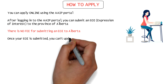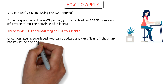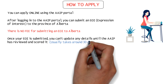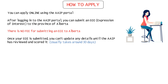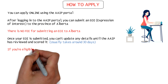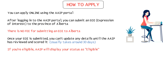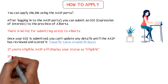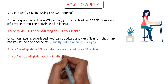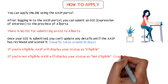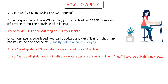Once your EOI is submitted, you will not be able to update it until the AAIP has reviewed and scored it. The AAIP will review and score your EOI within 30 days of submission. If you're eligible, your EOI status will show as 'Eligible.' If your EOI status shows as 'Not Eligible,' you will not be able to update it and must submit a new EOI.